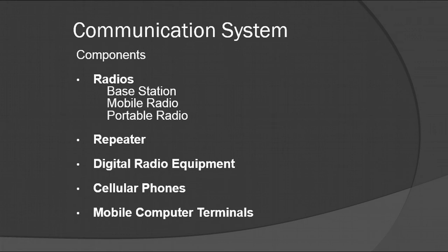For this particular section, we have radios, repeaters, digital radio equipment, cell phones, and mobile computer terminals. For radios, you have base stations, which are basically the center of operations; your mobile radios, which are in your fire department engines or ambulances; and then your portable radios, which are the ones that you take off to the scene.